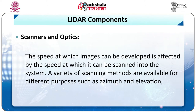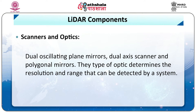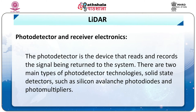The second component is scanners and optics. The speed at which images can be developed is affected by the speed at which the system can scan. A variety of scanning methods are available for different purposes, such as smooth elevation, dual oscillating plane mirrors, dual axis scanners and polygonal mirrors. The type of optic determines the resolution and range that can be detected by a system. The next component is the photo detector and receiver electronics. The photo detector is the device that records the signal being returned to the system. The two main types of photo detector technologies are solid state detectors such as silicon avalanche photodiodes and photomultipliers.